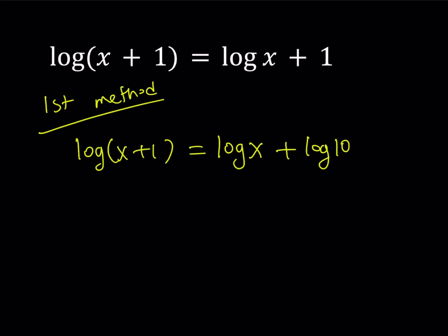Great. So now we can condense the expression on the right hand side, which means that log A plus log B can be written as log A times B. So I can write this as log(x+1) equals log of X times 10, which can also be written as 10X. Great.